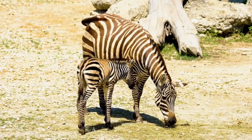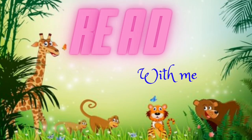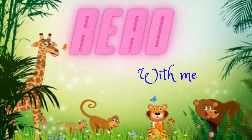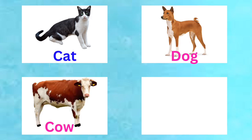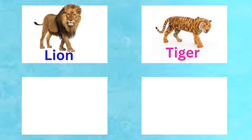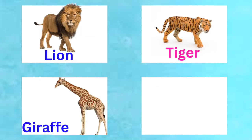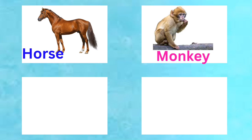Okay kids, now read one by one with me. Cat. Dog. Cow. Elephant. Lion.